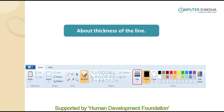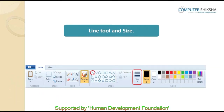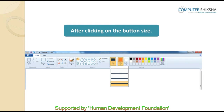We use thickness of the line to increase or decrease the width of the line. If someone asks you to draw four lines of different sizes, then we use thickness of the line. Look carefully at the picture — there are two places marked by red circles: the first is the line tool and the second is Size, which we also refer to as thickness of the line. As soon as you click on Size, a box opens showing four different sizes. The first is the thinnest, then each subsequent one is thicker, and the last is the thickest of all.